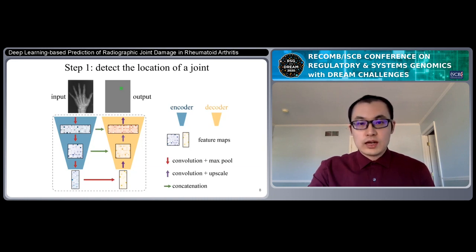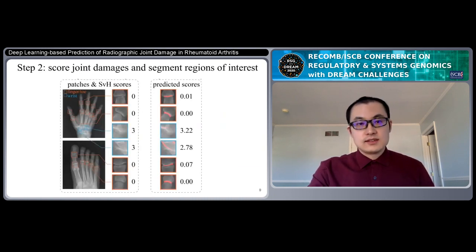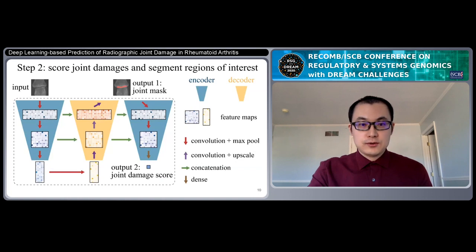Once we got the location of all these joints, in the second step, we cut the original image into small image patches and use these patches as input to predict the damage score. We designed a special network architecture which has two parts. The first part is similar to U-Net that has an encoder and decoder. This part will generate the first output which is the mask of the joint space. In the second part, we add another encoder which will generate the second output, the joint damage score.